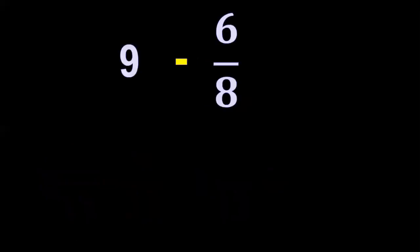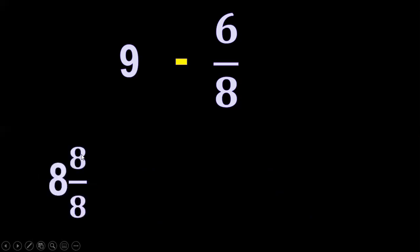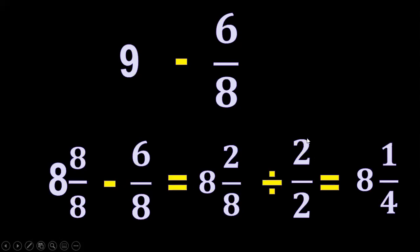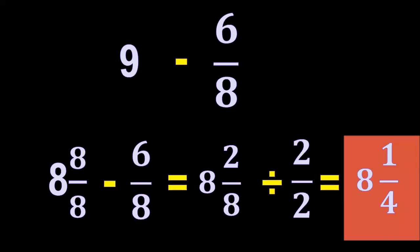Another one: nine minus six-eighths. Borrow one, then divide into eight equal parts. So the new minuend is eight and eight over eight. Copy minus six over eight. Subtract the whole number: eight minus zero equals eight. Then eight minus six equals two, and copy the denominator. Two and eight have a common factor of two. Divide: two divided by two equals one, and eight divided by two equals four. So the final answer is eight and one-fourth.